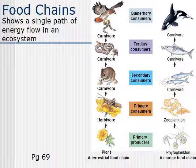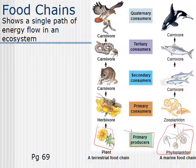Most of this should be a review from your 7th grade life science class. A food chain shows a single path of energy flowing through an ecosystem. You can see here a nice, simple example with two different food chains — one on land and one in the ocean. This first level, the primary producer level, is where the food chain actually starts in terms of life. On the plant side, this organism does photosynthesis. These producers are called primary producers — primary meaning first.